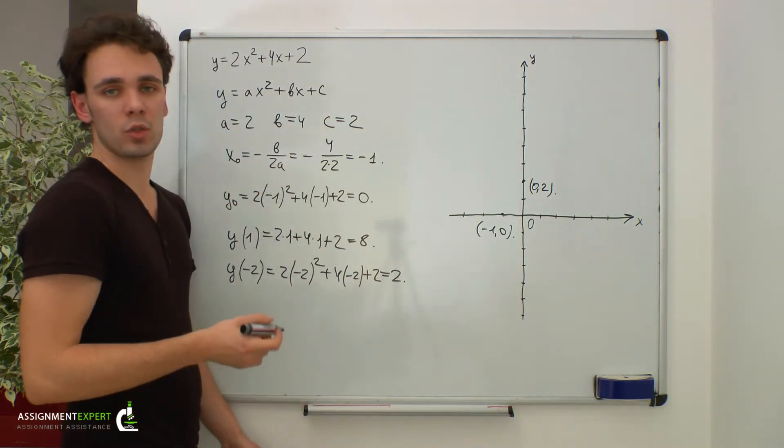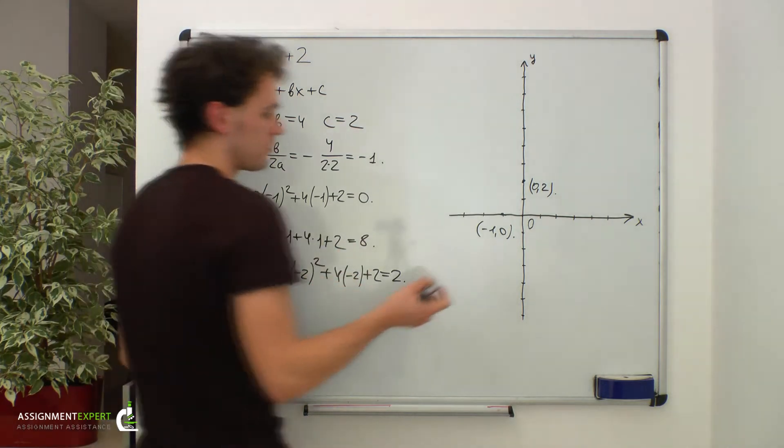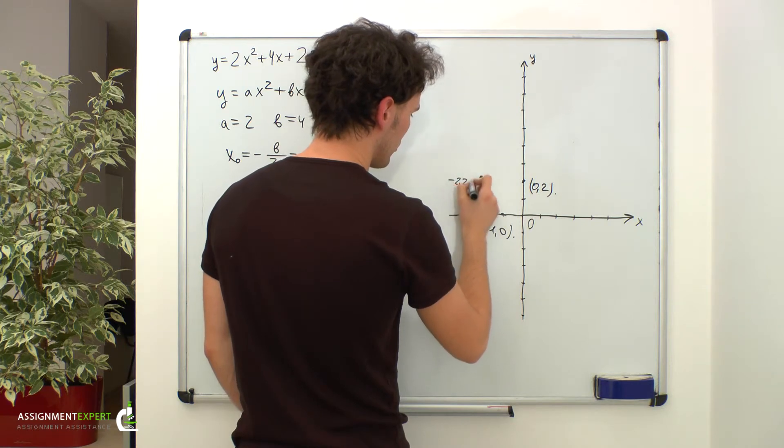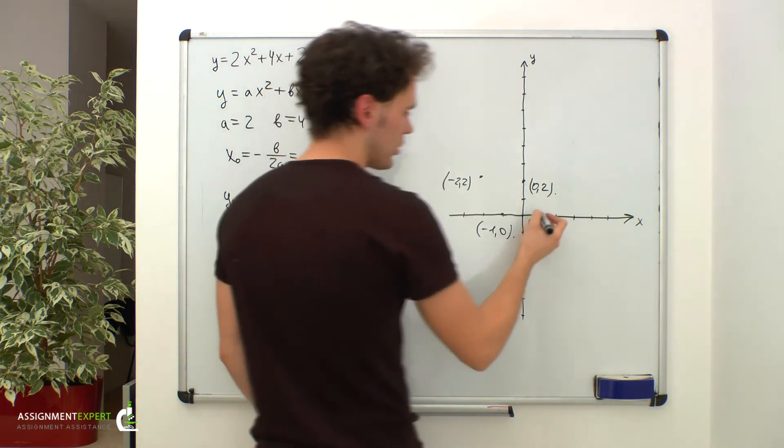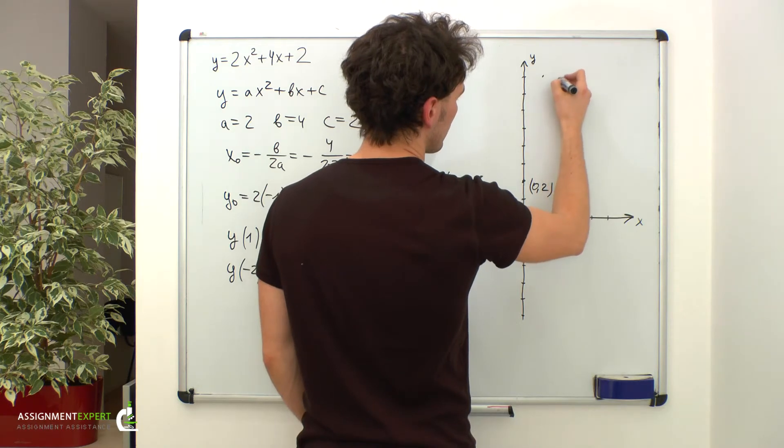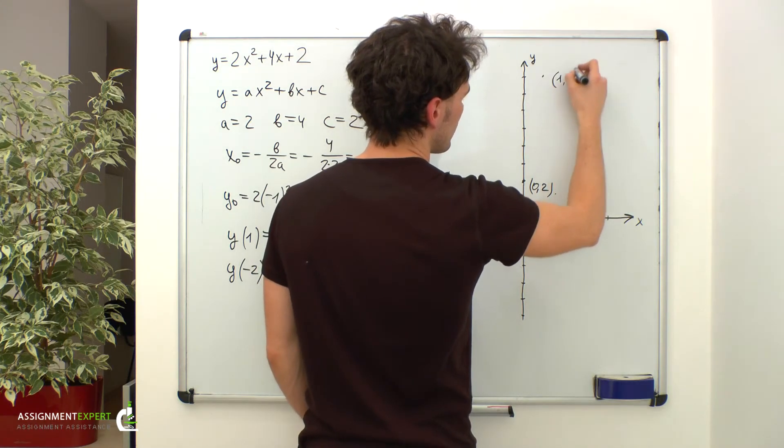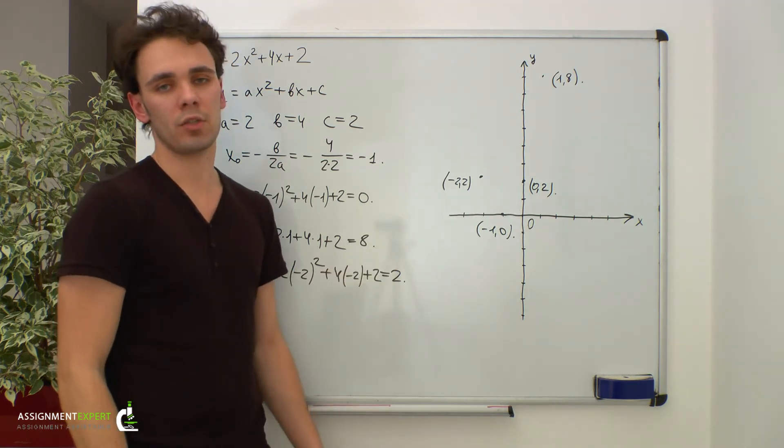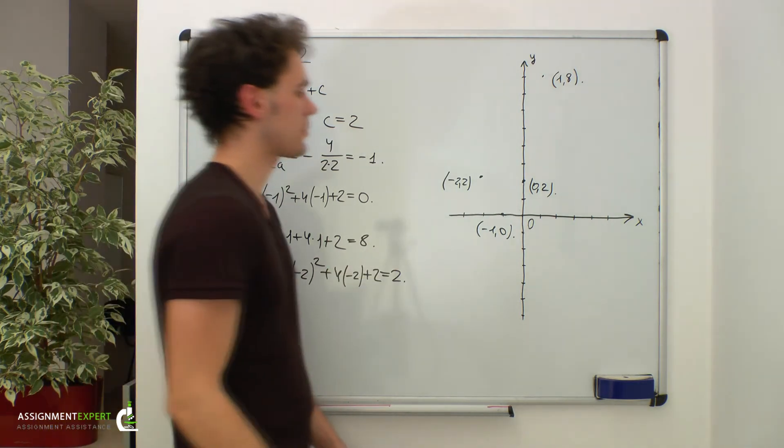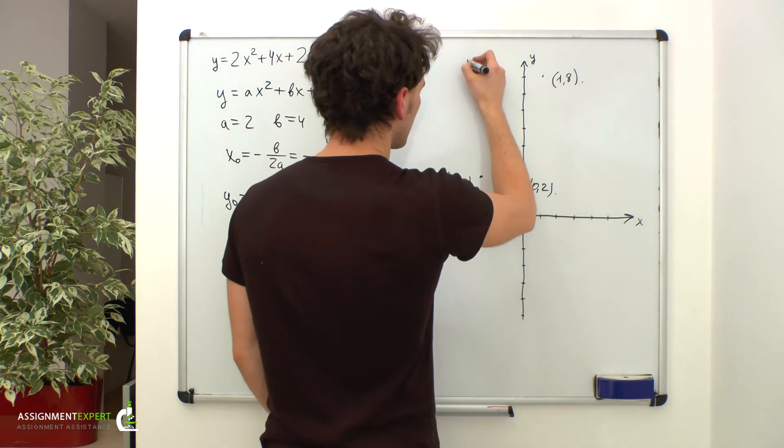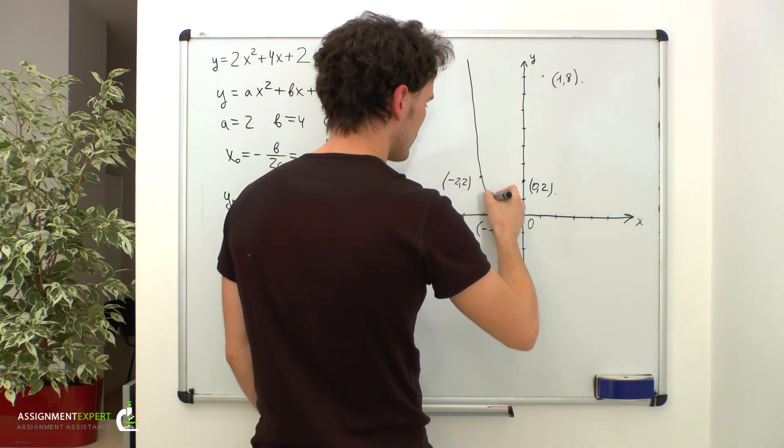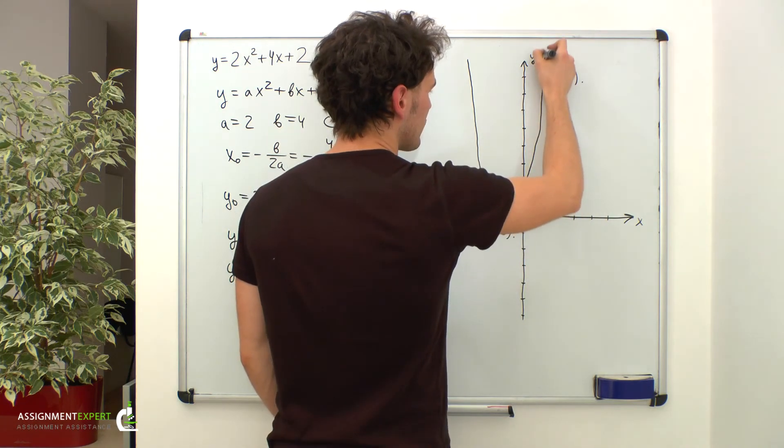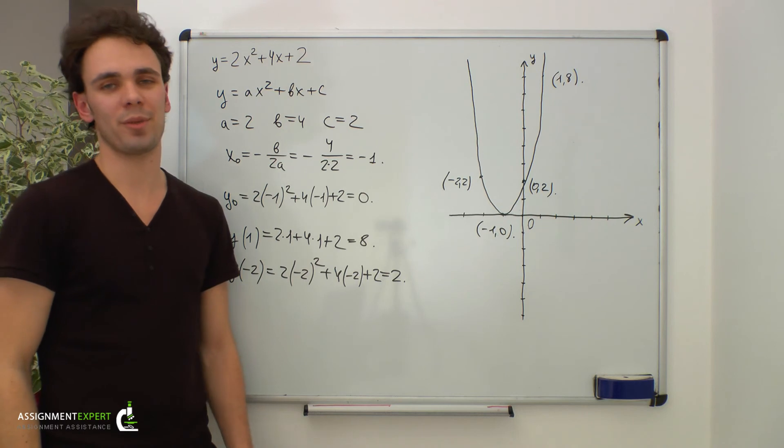So let's mark these two new points for our graph. One point is right here, negative 2 comma 2, and the other is right here, 1 comma 8. Now we have enough points and we can connect them to find the graph of our parabola. Let's do this. So this is the look of our parabola.